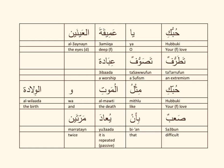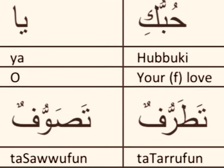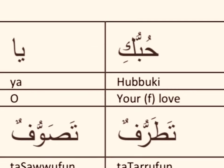The first word we have here is 'hubb', which means love. Attached to that at the end is 'ki', which means feminine — speaking to a woman. So 'hubbuki' means 'your love' or 'loving you'. The u above the ba is a case ending for the nominative case, which shows that hubb is the subject of the sentence.